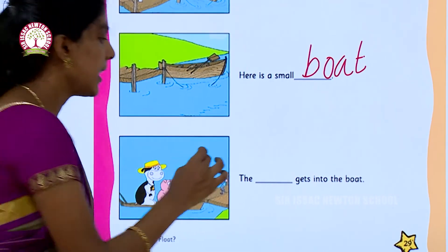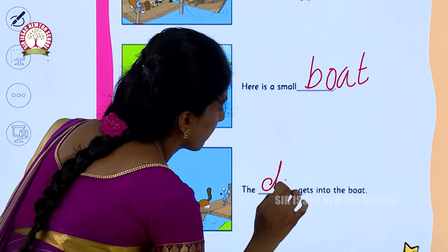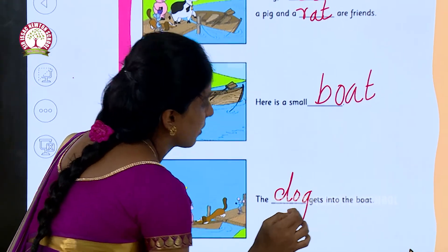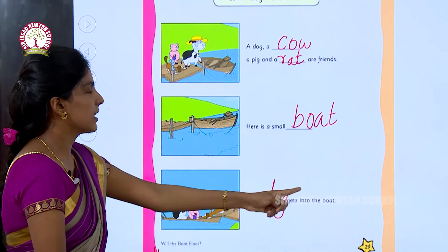The spelling of the dog is D-O-G. D-O-G dog. The dog gets into the boat.